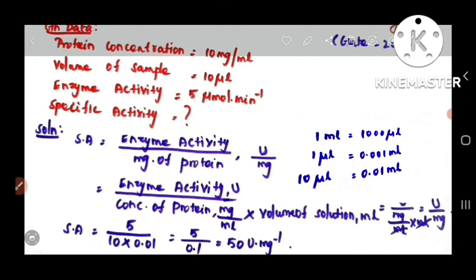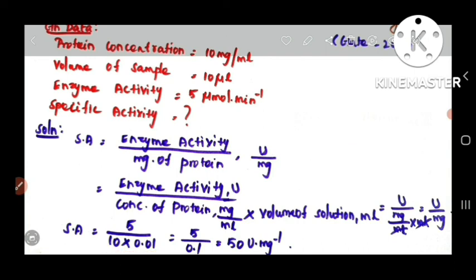Now substitute all values in the formula. Specific activity equals enzyme activity 5, divided by concentration of protein 10 mg per ml multiplied by volume of sample 0.01 ml. This equals 5 divided by 0.1, which equals 50 U per mg.